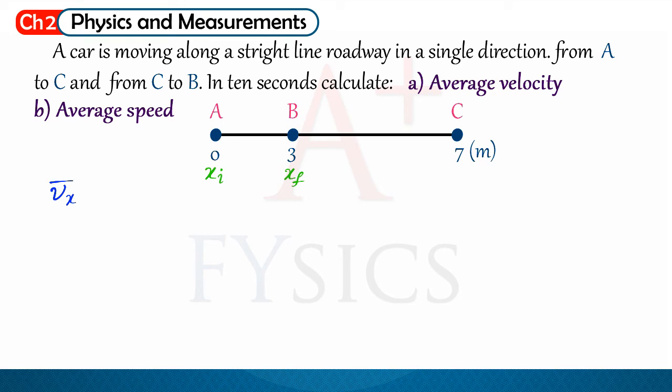First, we write the relation. Average velocity is equal to delta x over delta t. Delta x means x final minus x initial. x final is 3 meters and x initial is 0. So, the equation is 3 minus 0 divided by time. Time is 10 seconds. So, 3 by 10 is 0.3 meters per second. As we said, velocity is a vector quantity. So, we have to state a direction and the direction is to the right.